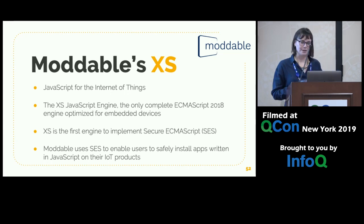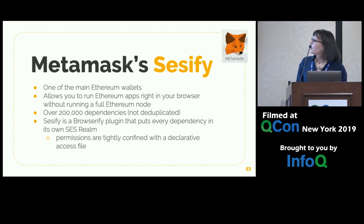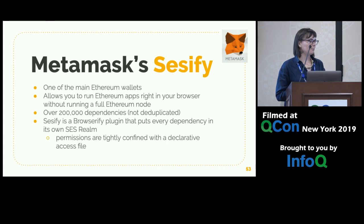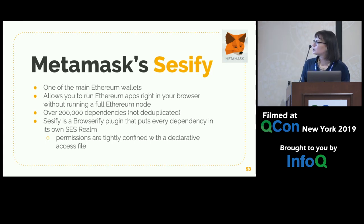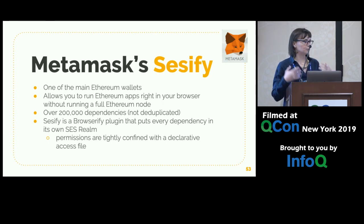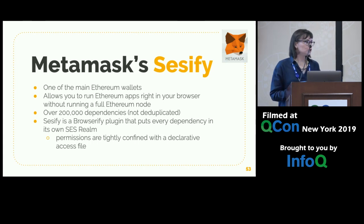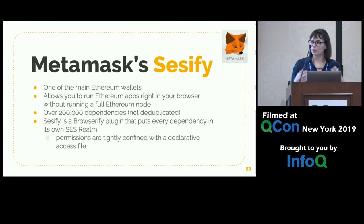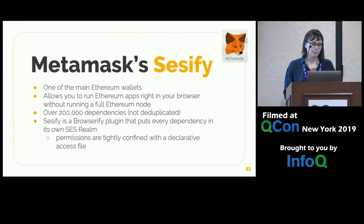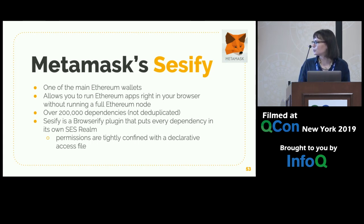You can imagine you have your oven, washer, light bulb — you're able to control all of those things with code you write, and the manufacturer can let you do that because it's safe. They've isolated your code, and it can only do certain things like make the light change color.